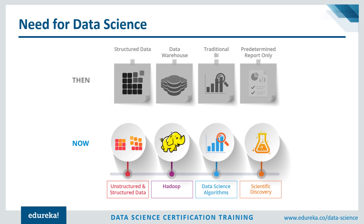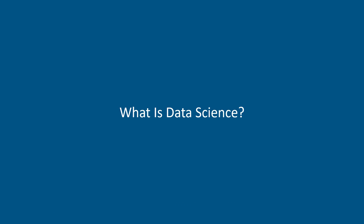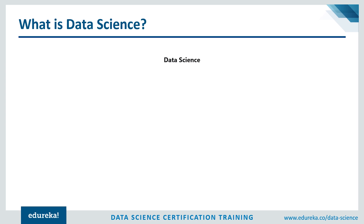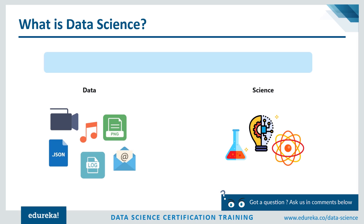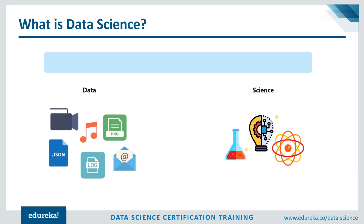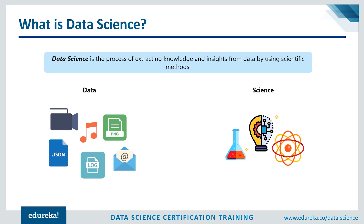The data generated these days is mostly unstructured or semi-structured, and simple business intelligence tools can no longer do the work. We need more complex and effective algorithms to process and extract useful insights from the data — this is where data science comes in. Now, the term data science may seem scary, but understanding it is quite simple. Data is any raw information collected from various sources; science is the process of exploring, observing, and making sense of something.